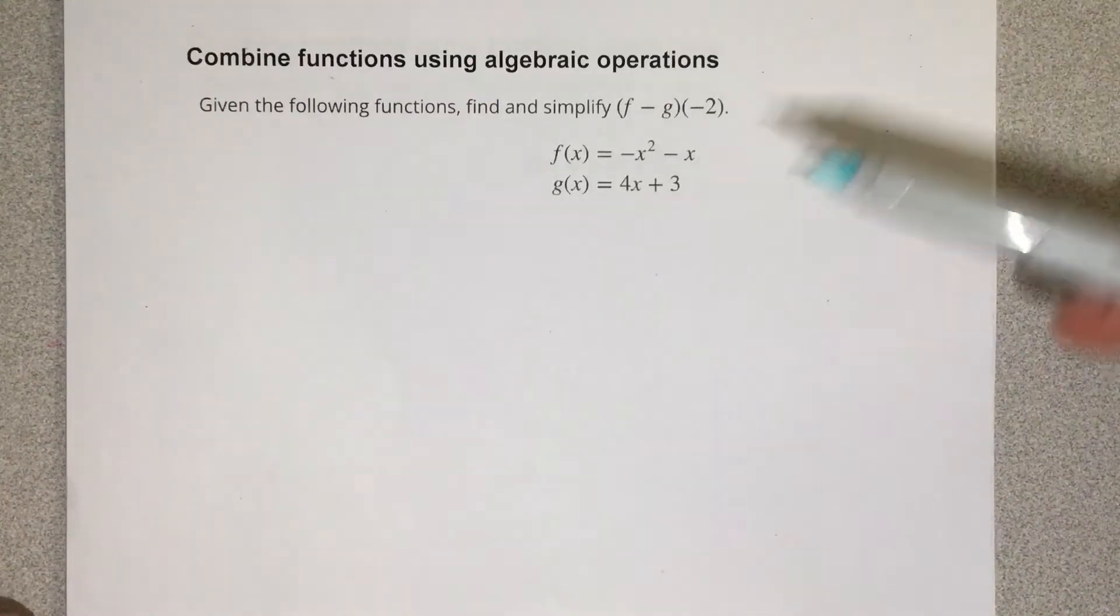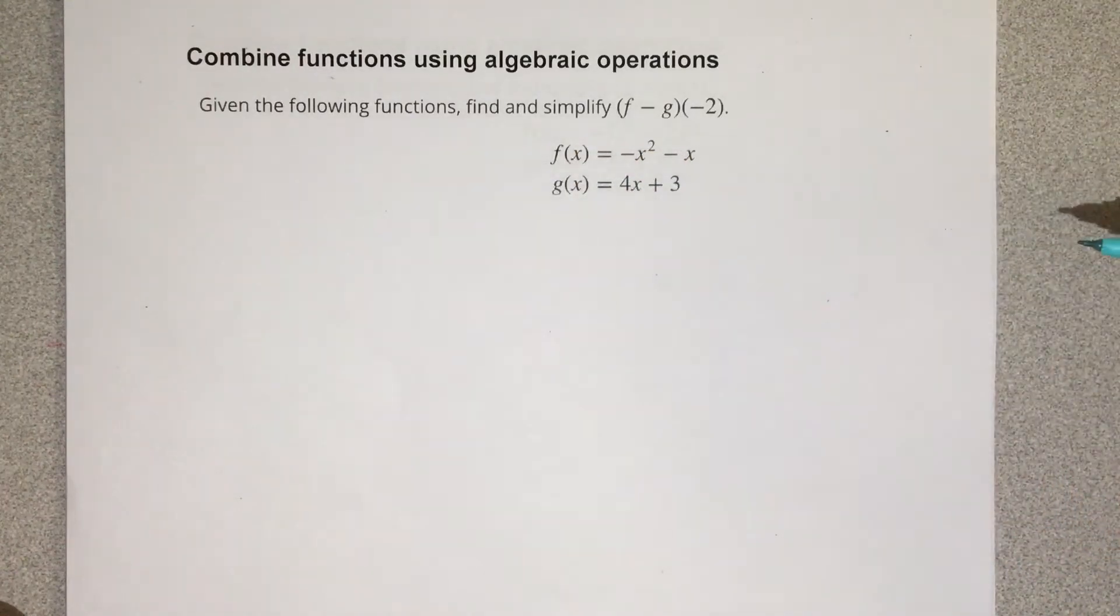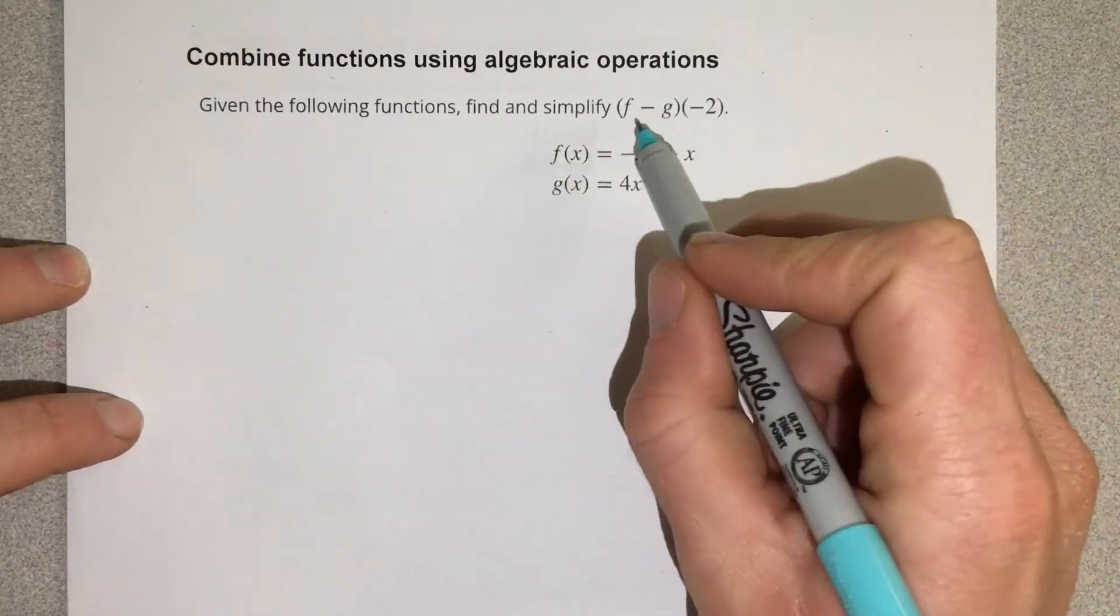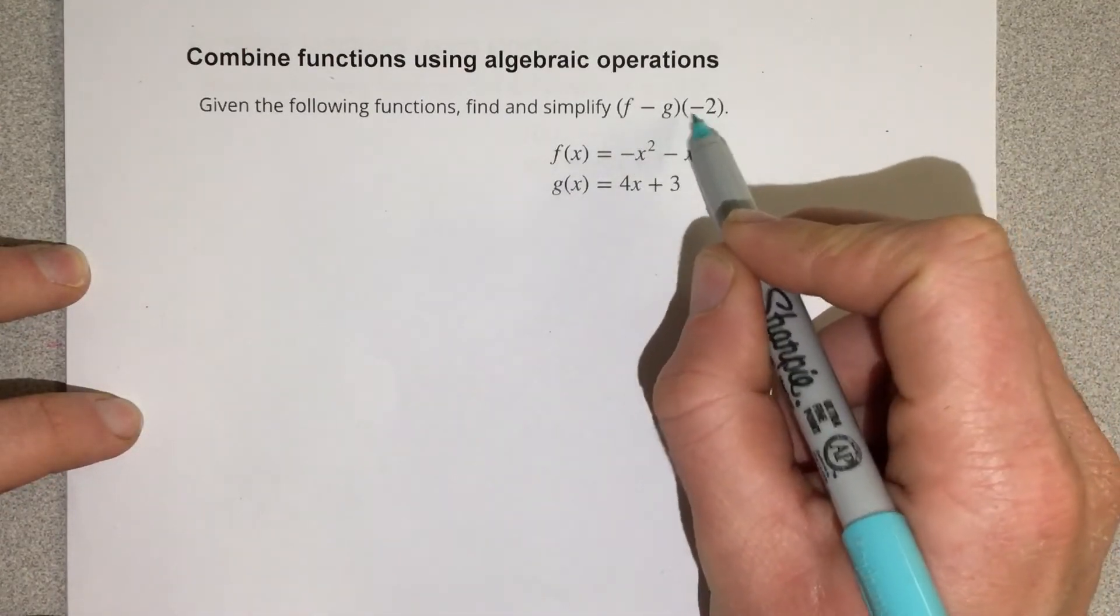In this video, we're going to look at combined functions using algebraic operations. You can see that we have f minus g of negative 2.